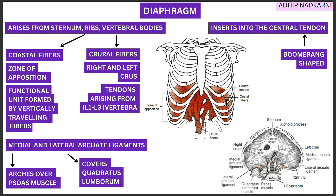The central tendon is boomerang-shaped. The diaphragm originates from all sides and inserts into this central tendon. The diaphragm is divided into parts based on its origin: fibers arising from the ribs are called costal fibers, and fibers arising from the vertebral bodies are called crural fibers.